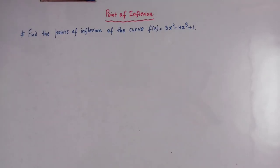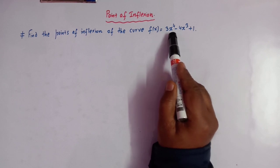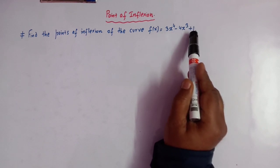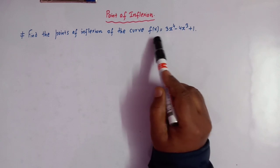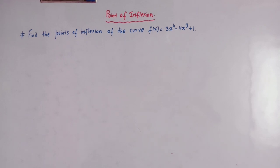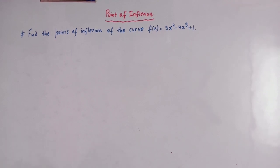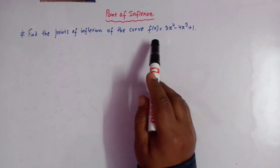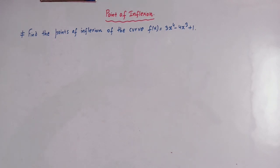Hello viewers, in today's class we are going to discuss the algorithm for how to find the point of inflection of a given curve. Here we'll quickly discuss a problem in which we have to find the point of inflection of the curve f(x) = 3x⁴ - 4x³ + 1. Our detailed video on point of inflection is already uploaded and you can refer to that video.